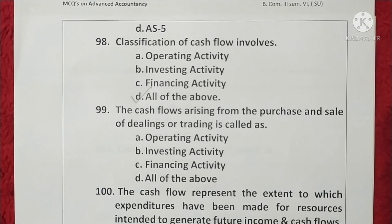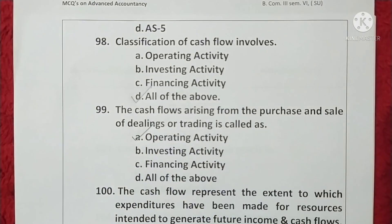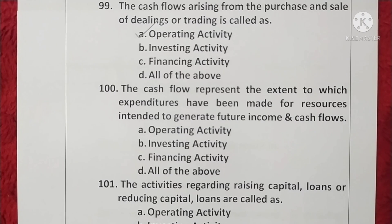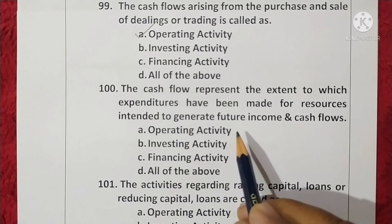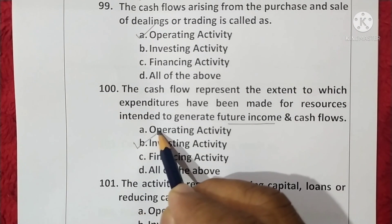Question 99. The cash flow arising from purchase and sale of dealings or trading is called what? Purchase and sale of dealings means purchase and sale of goods — it is an operating activity. Option A is correct. Question 100. The cash flow representing expenditure made for resources intended to generate future income is an investing activity. Option B is correct.